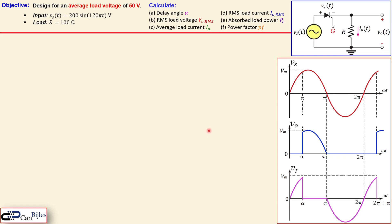Before we start calculations, let's look at the waveforms. This is the waveform for our input Vs; the maximum is Vm, which is 200 volts. The plot is given in radians, going from 0 to 2π — that's the full period. The output is only activated at alpha. It stays at 0 and then when the gate is fired, the output increases to the input sine wave value for the positive cycle.